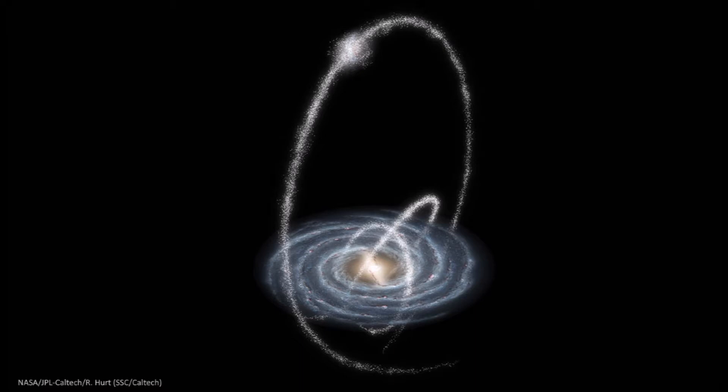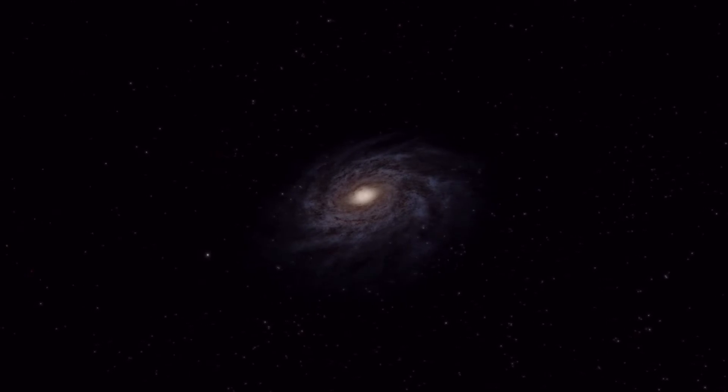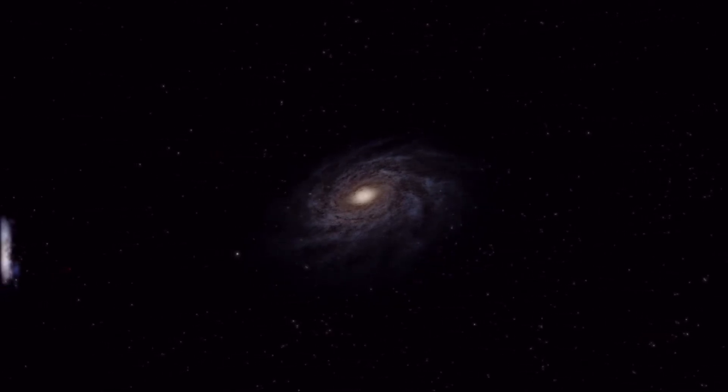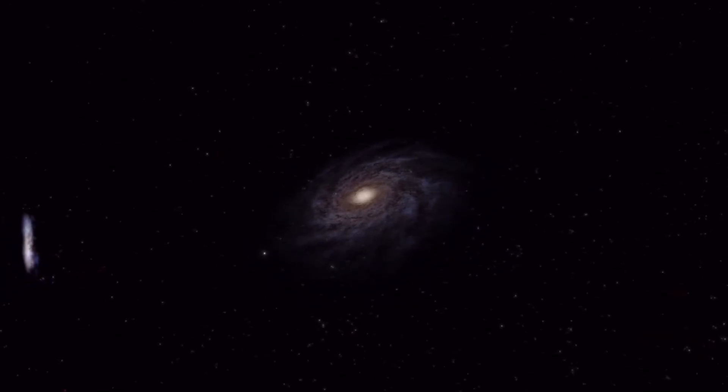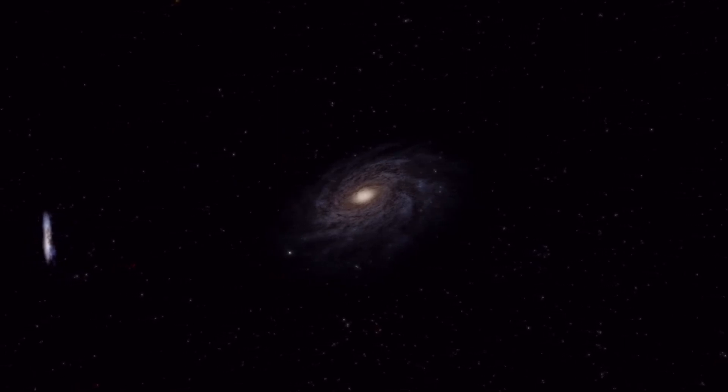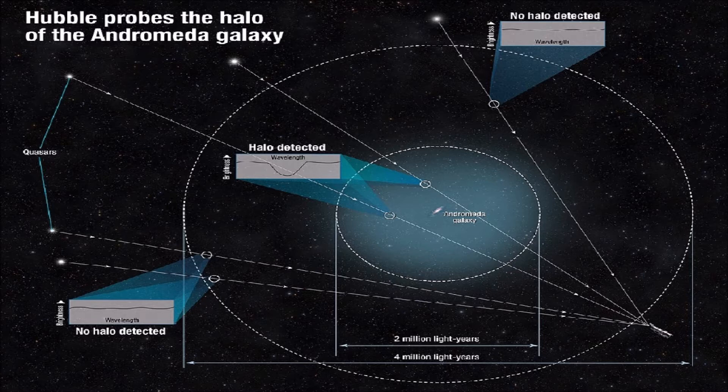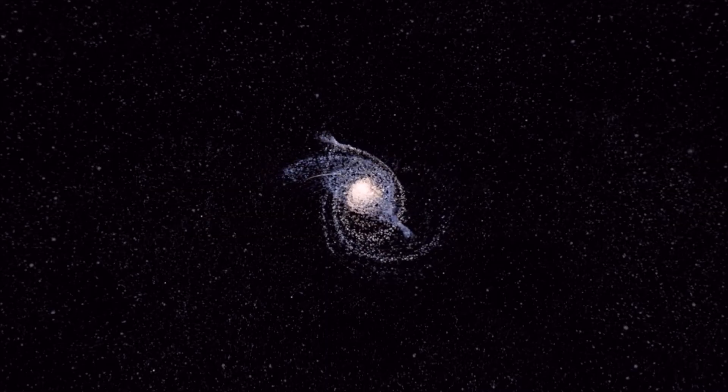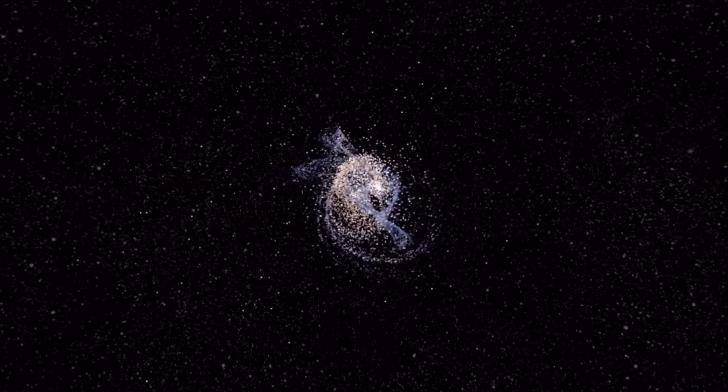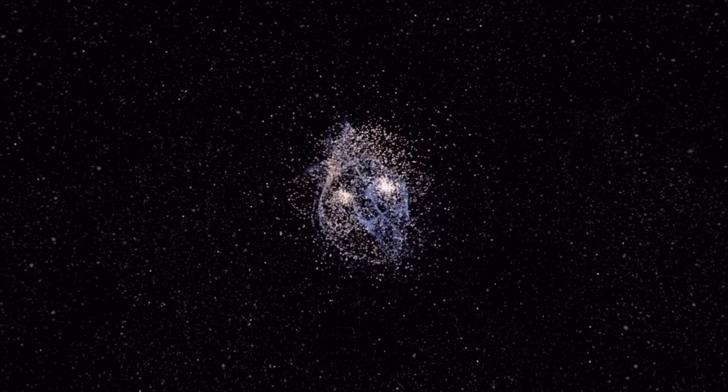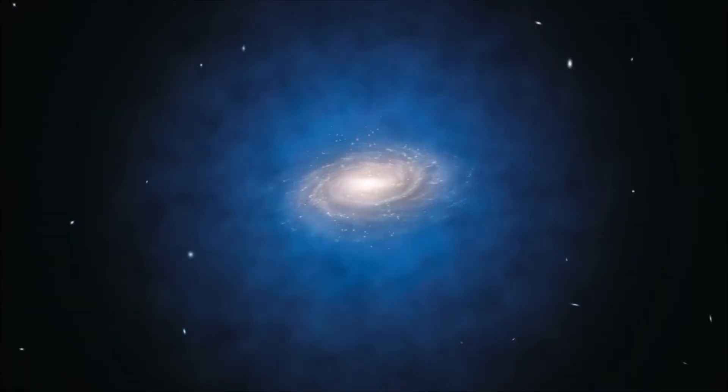All galaxies have a halo of dark matter, gas, dust, and rogue stars around them as well. In fact, these halos are so large that the halo of our galaxy and the nearby Andromeda galaxy are already colliding, even though the main collision isn't supposed to happen for another four and a half billion years. These halos are much less dense than their galactic counterparts.